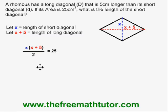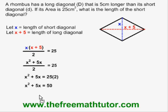Simplifying, I get x squared plus five x over two equals 25. And then if I multiply both sides of the equation by two, x squared plus five x equals 50.